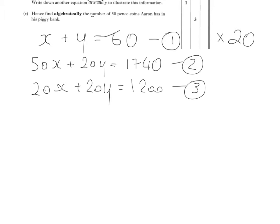So next thing is the signs are the same, so I'm going to subtract. Now I could do 2 take away 3 or 3 take away 2. I don't want to involve negative numbers just to cut down the awkwardness, so I'm going to do equation 2 take away equation 3. 50x take away 20x is equal to 30x. 20y take away 20y goes. 1740 take away 1200 will give me 540.